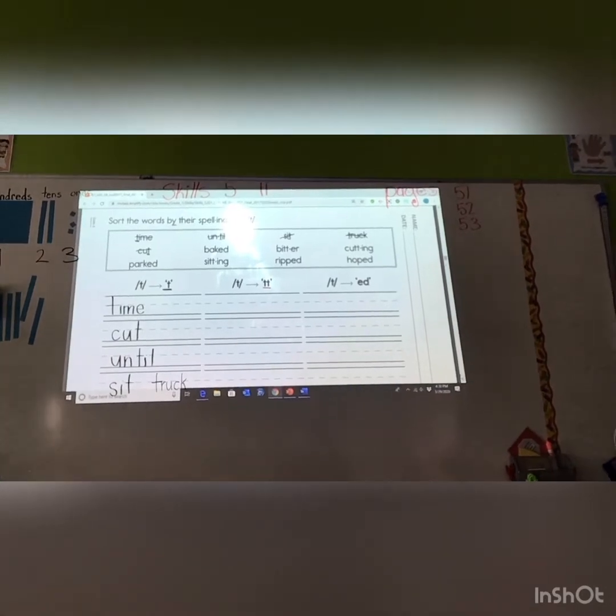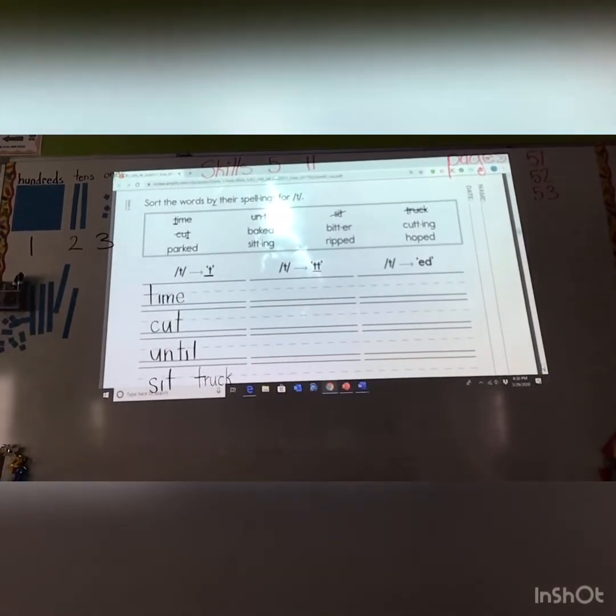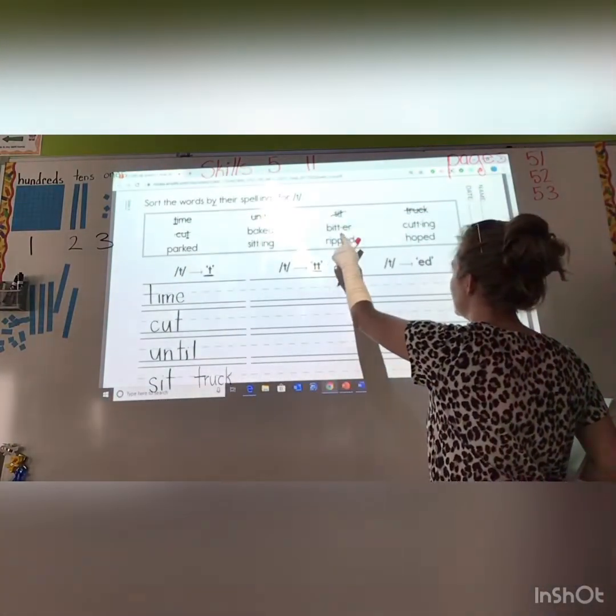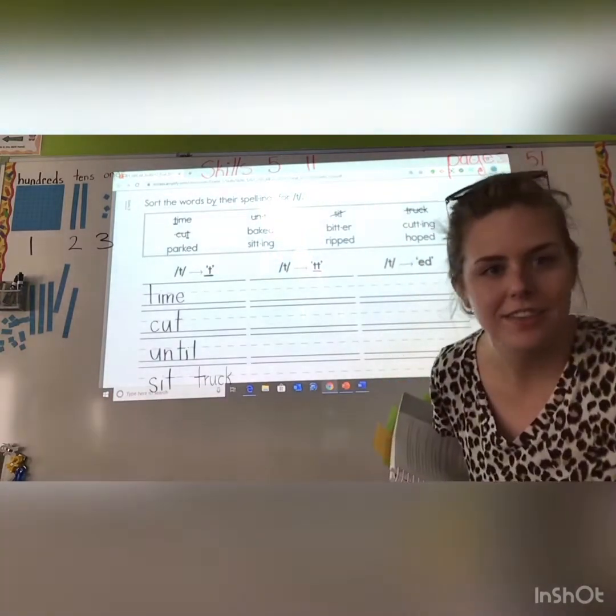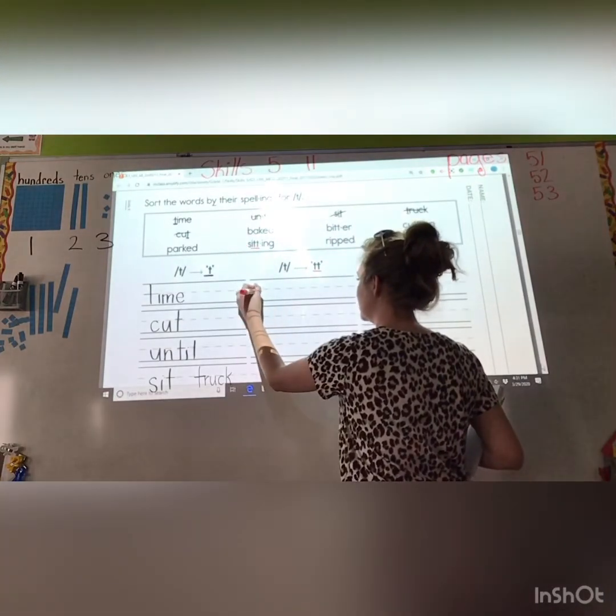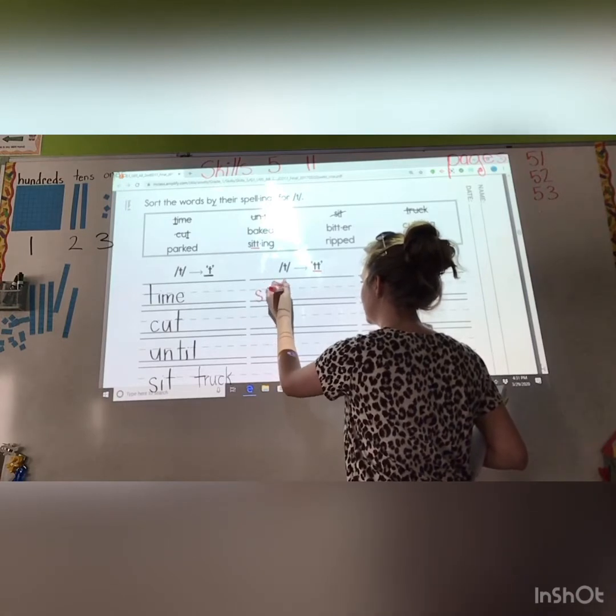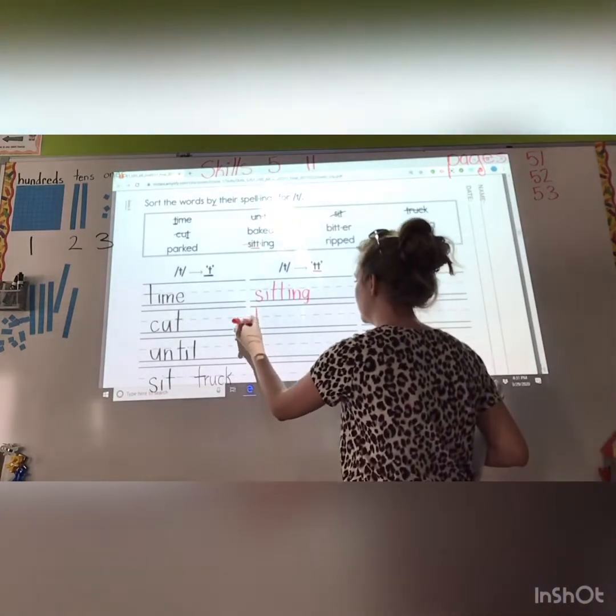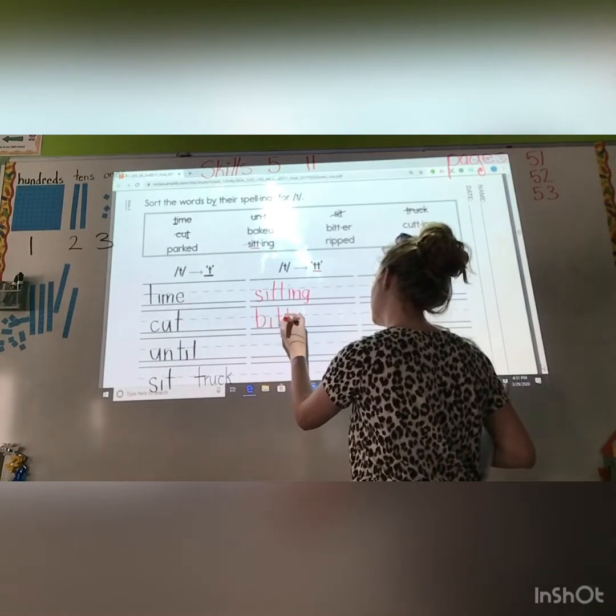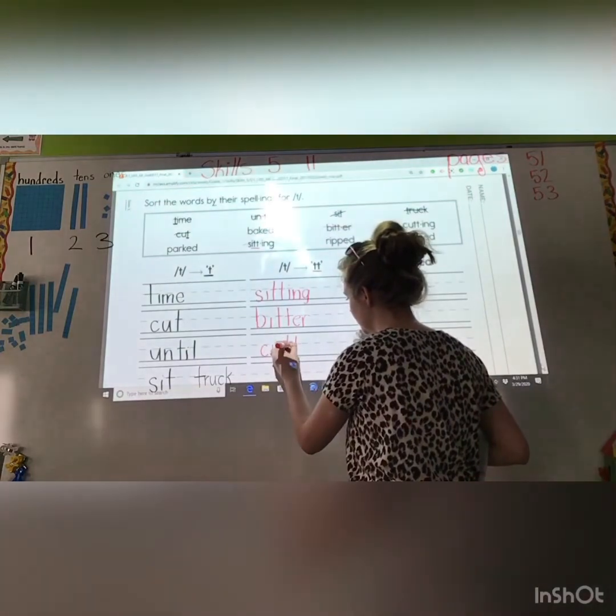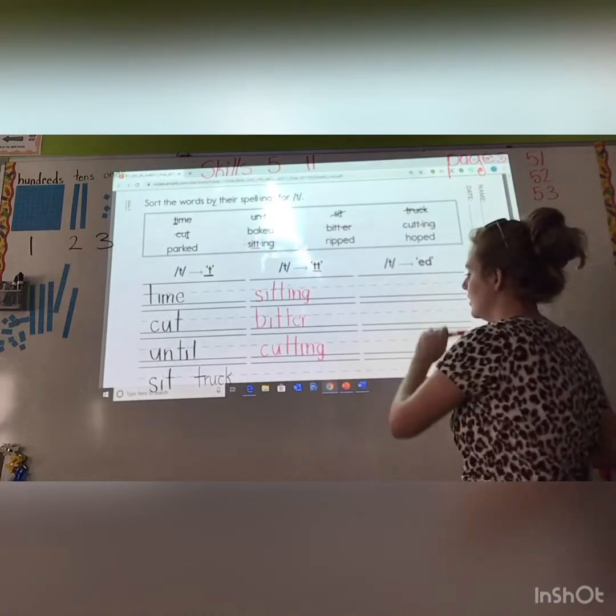And then I'll check you in just a few minutes. Here, let's scoot it up. OK. Very good. You already knew that. Parked. Baked. Ripped. And hoped. They don't have double T's. So, we're going to skip them. Very good. We are going to do the word sitting. S-I-T-T-ing. I-N-G. And then bitter. Bitter. And cutting. Cutting.